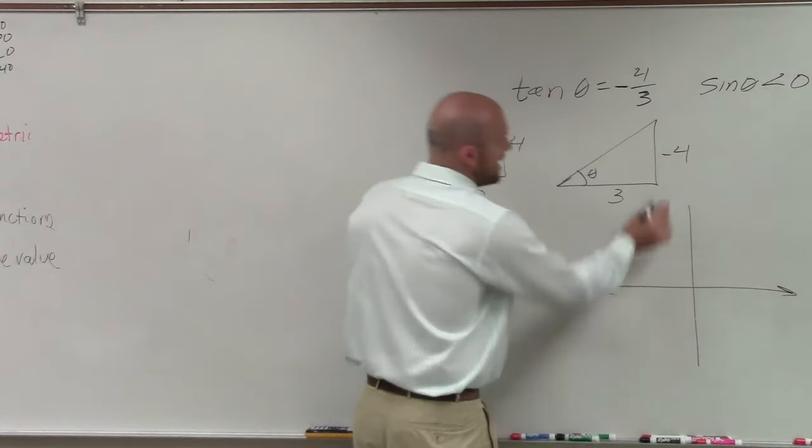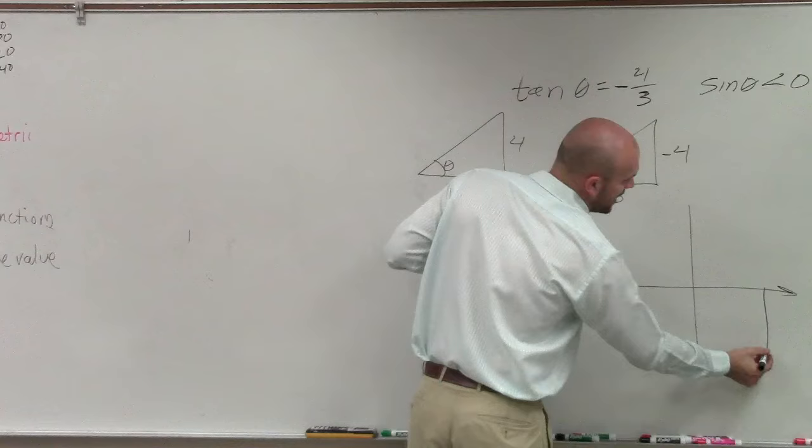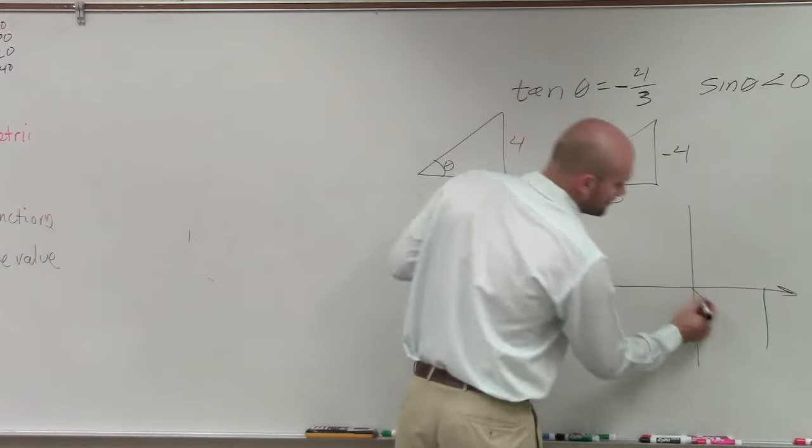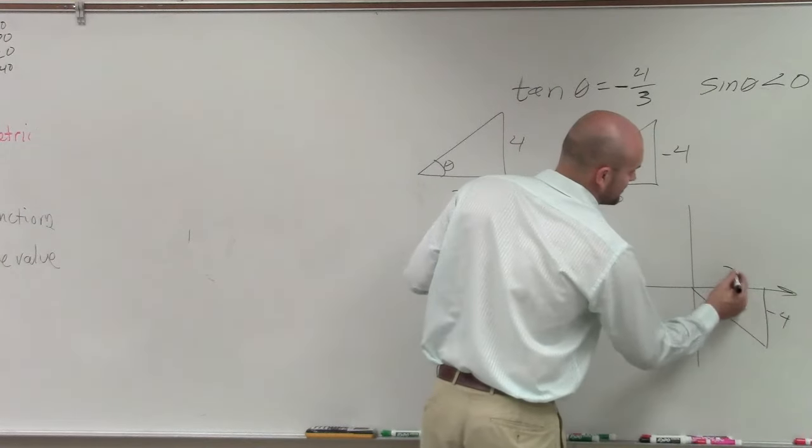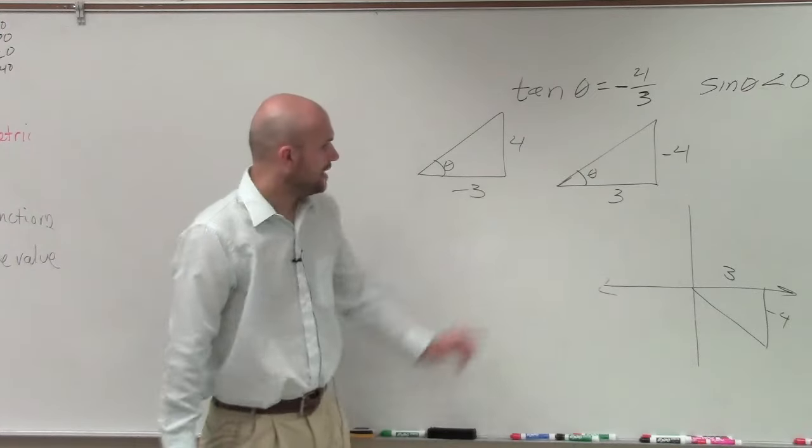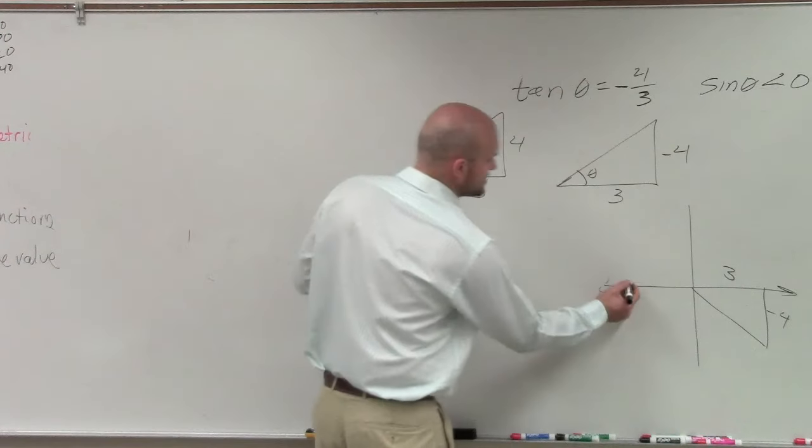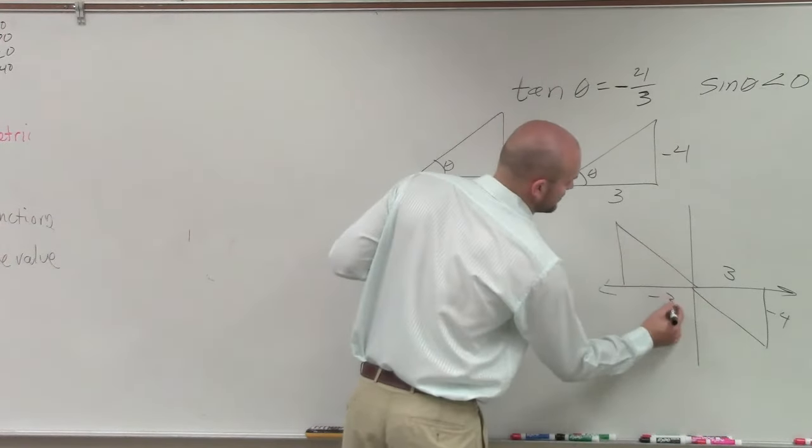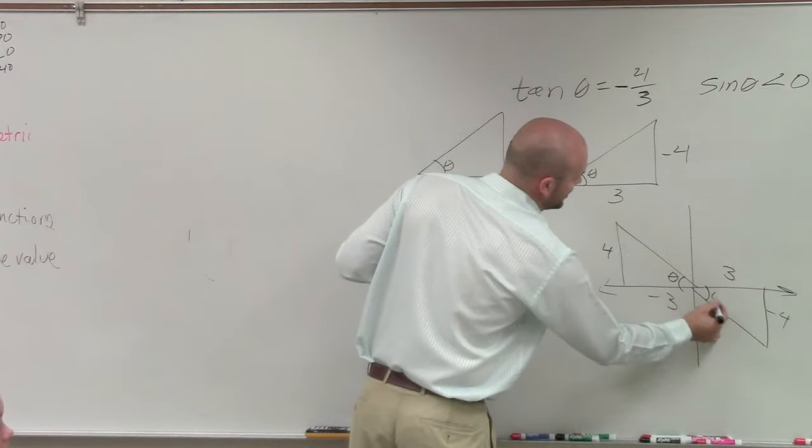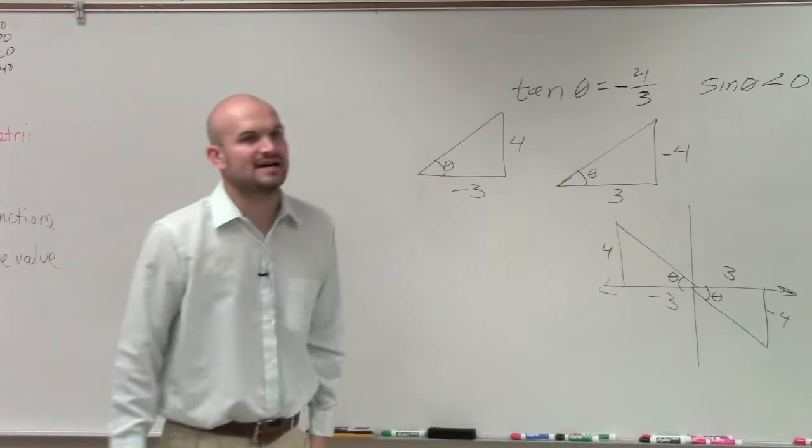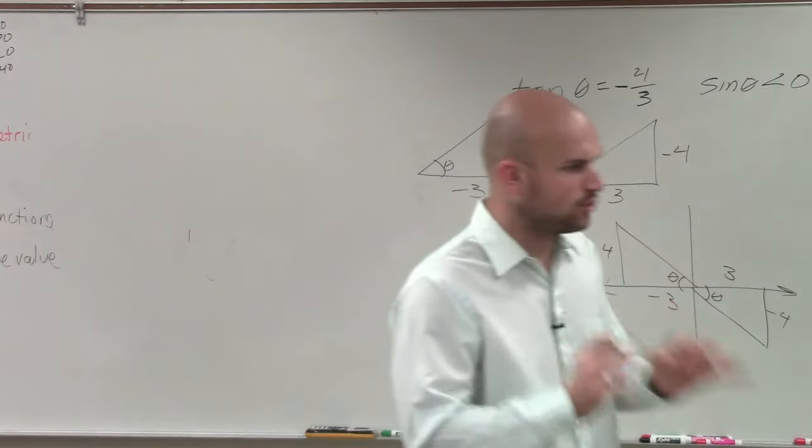If my opposite side was negative, that means I'm going to go down negative 4, right? So it looks something like this. Or if my 3 was negative, it looks something like this. Remember, I'm always going to have my theta in my central angle about my origin.